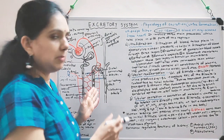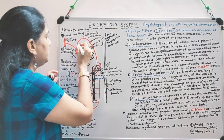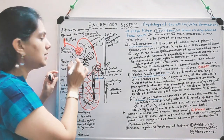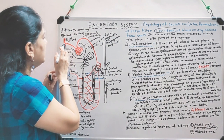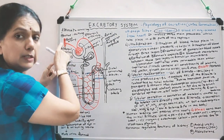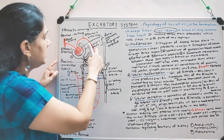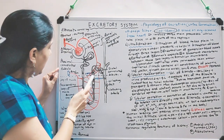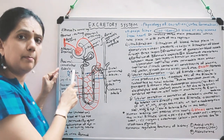You remember the structure of the nephron, I hope. Let me give you a quick brief revision. This is the Bowman's capsule and this is the tuft of capillaries called the glomerulus. The glomerulus is formed from the afferent arteriole, which is part of the renal artery. The efferent arteriole leaves the glomerulus, forms a capillary network around the tubule, and then joins the renal vein, taking blood back to the heart.